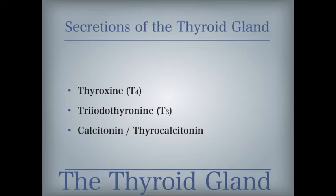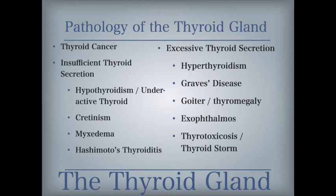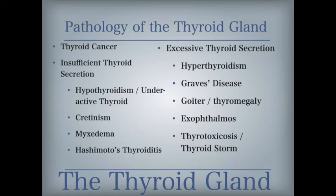Pathology of the thyroid gland: thyroid cancer is commonly first indicated by an enlargement of the thyroid gland; with early detection and treatment the survival rate is high, but without treatment the cancer will spread. Insufficient thyroid secretion includes hypothyroidism, also known as underactive thyroid — a deficiency of thyroid secretion with symptoms including fatigue, depression, sensitivity to cold, and a decreased metabolic rate. Cretinism is a congenital lack of thyroid secretion; if treatment is not started soon after birth, it causes arrested physical and mental development. Myxedema is a severe form of adult hypothyroidism, with symptoms including an enlarged tongue and puffiness of the hands and face. Hashimoto's thyroiditis is an autoimmune disorder in which the immune system attacks thyroid tissue, which may cause goiter or hypothyroidism.